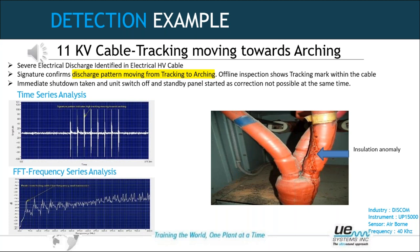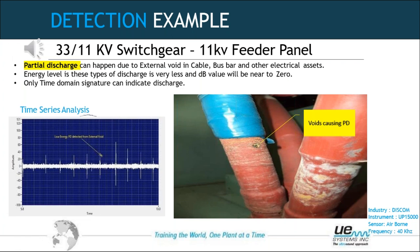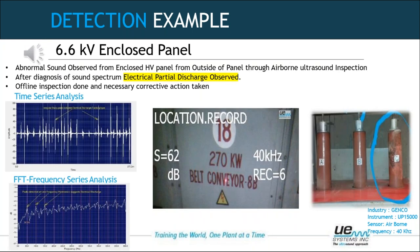Moving again to a 33/11 kV switchgear panel for an 11 kV feeder panel — there was a void in the cable causing partial discharge due to that void. Ultrasonic inspection can detect these kinds of voids. The cable next to it had white deposition and acid formation was taking place, eating away the insulation. The same airborne sensor was used here. Moving to a 6.6 kV enclosed panel — we also found electrical partial discharge here, and after opening we could see the results on screen with time series and frequency series analysis.